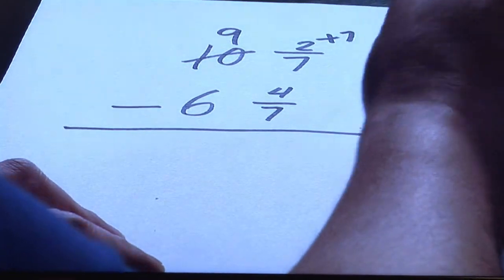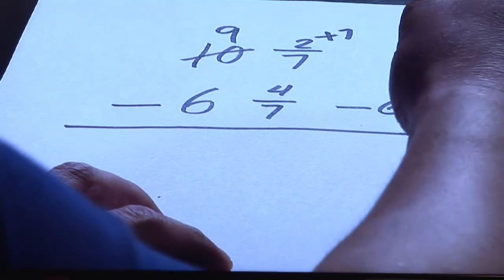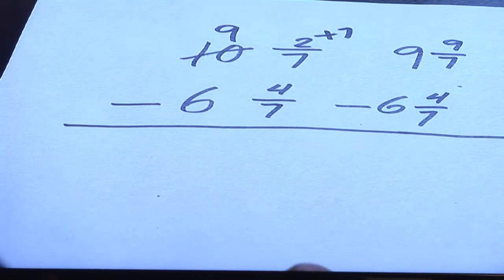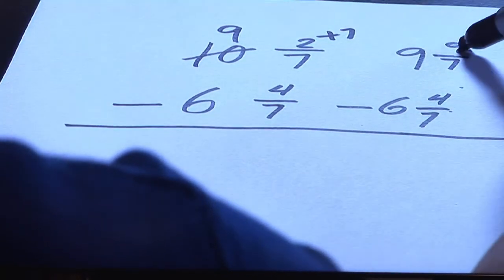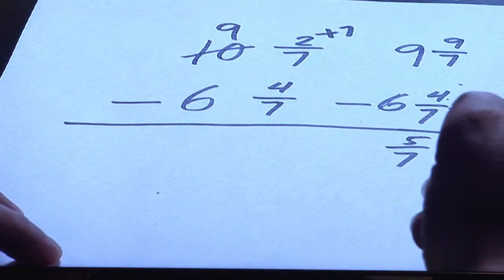You notice I'm not touching the second fraction, I'm only dealing with the first. But I'm just going to carry over the minus six and four sevenths and now I can subtract both pieces. Nine sevenths minus four sevenths, nine minus the four is five sevenths.